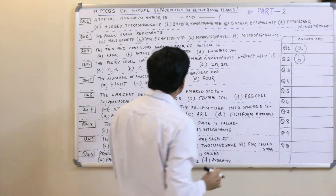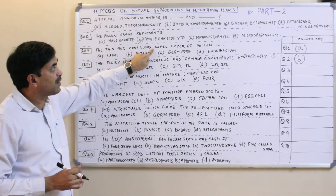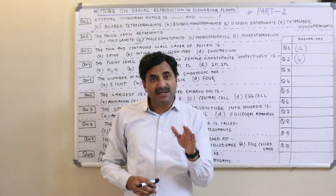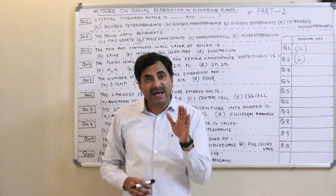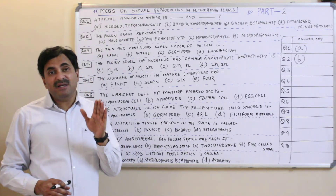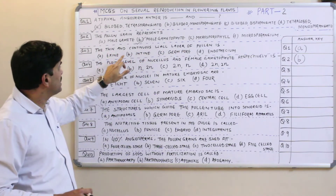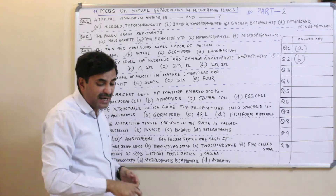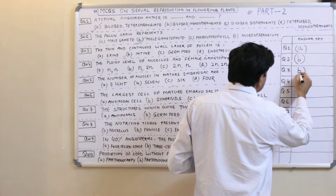Question number three: the thin and continuous wall layer of pollen is — we know that the pollen grain is surrounded by two layers: the outer layer is called exine and the inner layer is called intine. The outer layer is not continuous — it has germ pores and is variously ornamented — while the inner layer is entirely smooth. So the thin and continuous wall layer of pollen is intine. Question number three has the answer B.